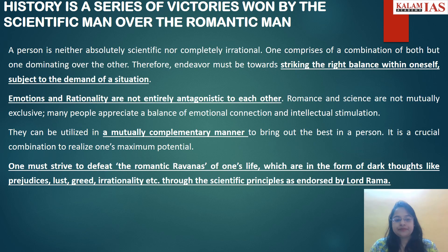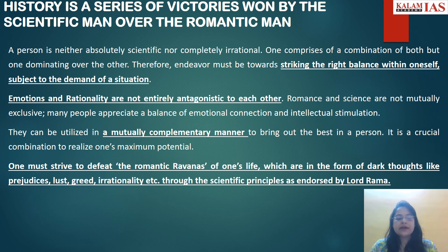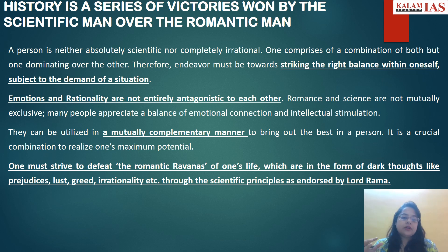Then comes the conclusion of the essay, where you talk about balance. Throughout the essay we justified how the scientific man was winning over the romantic man and how scientific temper was important, but in some cases romantic emotions were also important to consider. In conclusion, you have the right balance in oneself, subject to the demand of the situation. You mention that emotions and rationality are not entirely antagonistic or mutually exclusive — they are complementary to each other.